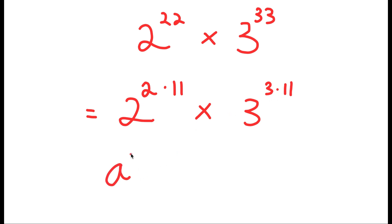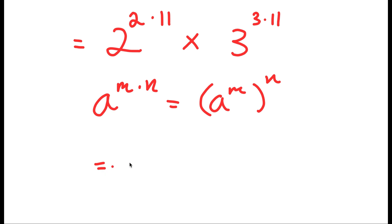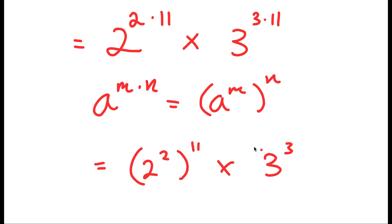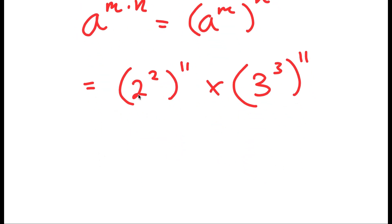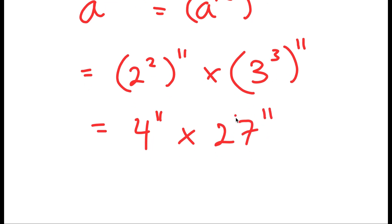Now, if I have something in the form a to the power of m times n, this is equal to a to the power of m to the power of n. So this turns into 2 to the power of 2 to the power of 11 times 3 to the power of 3 to the power of 11. Now, 2 to the power of 2 is 4, so I get 4 to the power of 11. And 3 to the power of 3 is 27, so 27 to the power of 11.